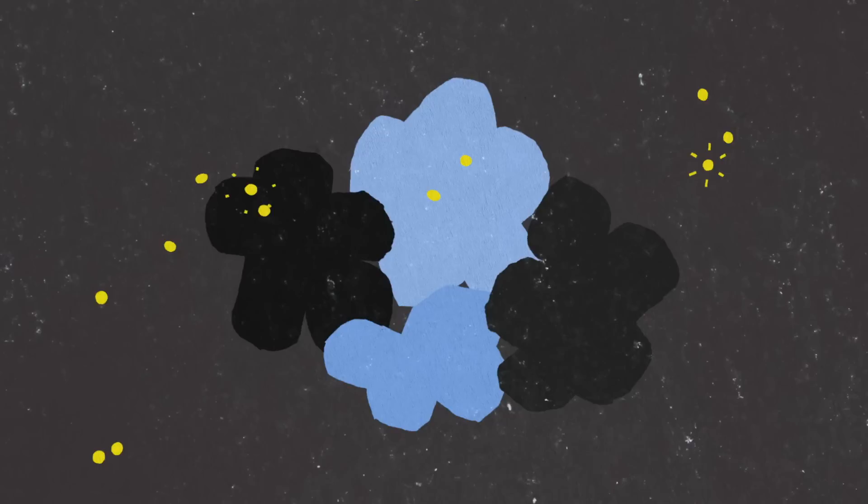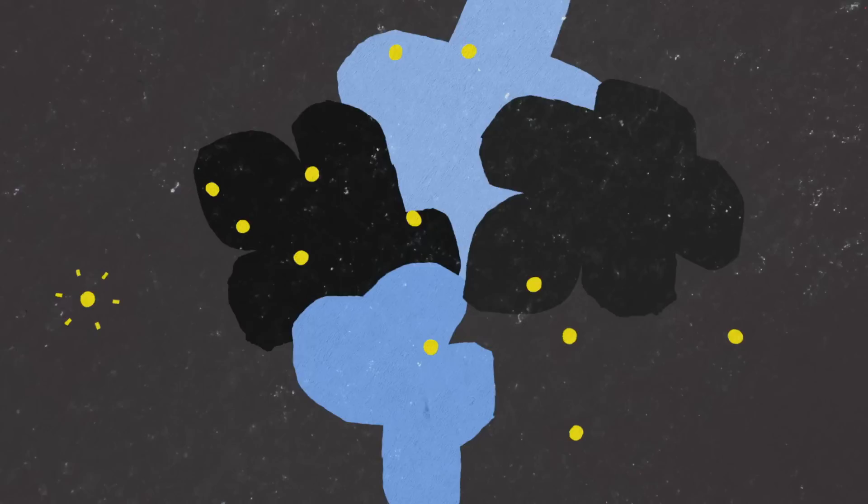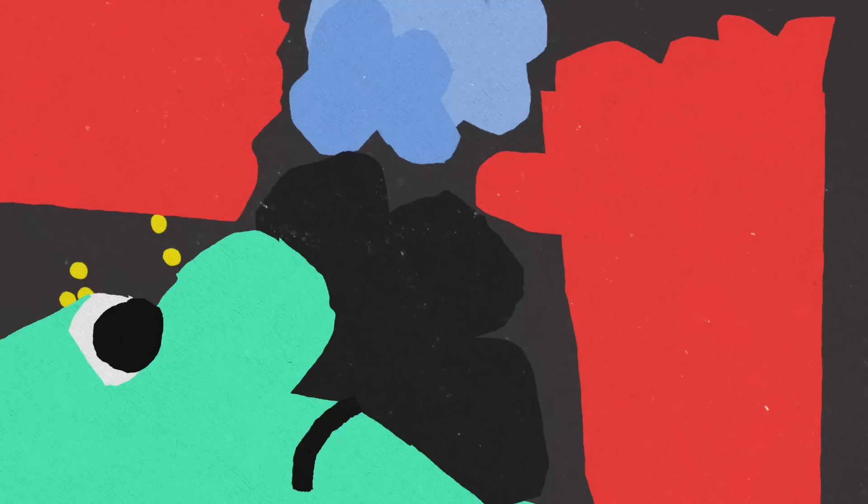In the moments just after the Big Bang, all three components are in equilibrium, meaning no one location is denser than another. But as the universe starts expanding, differences in densities start to emerge.